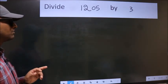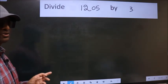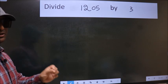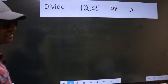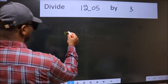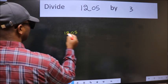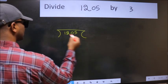Divide 1205 by 3. To do this division, we should frame it in this way. 1205 here, 3 here.